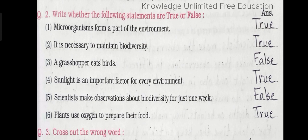Number 3: A grasshopper eats birds. Answer: false. Number 4: Sunlight is an important factor for every environment. Answer: true. Number 5: Scientists make observations about biodiversity for just one week. Answer: false.